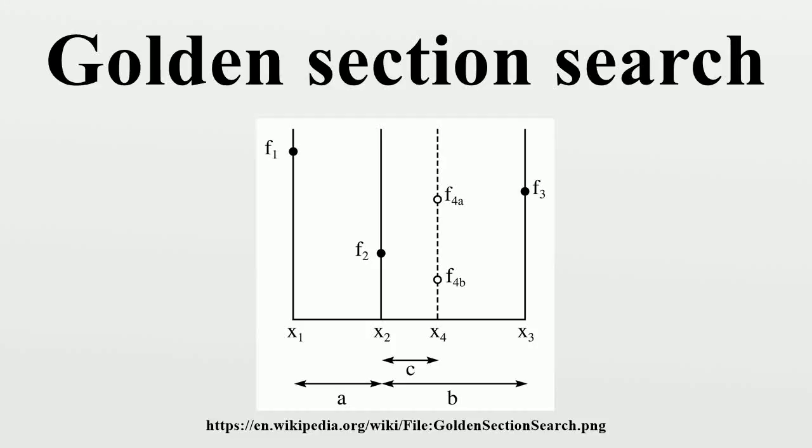The golden section search is a technique for finding the extremum of a strictly unimodal function by successively narrowing the range of values inside which the extremum is known to exist.